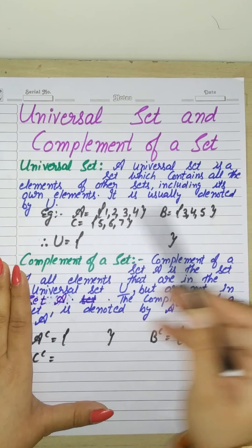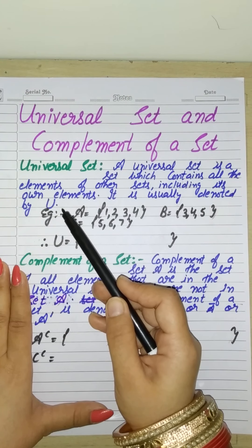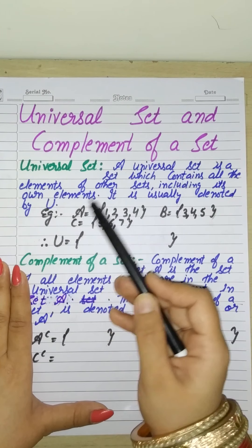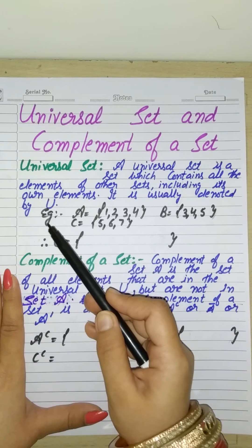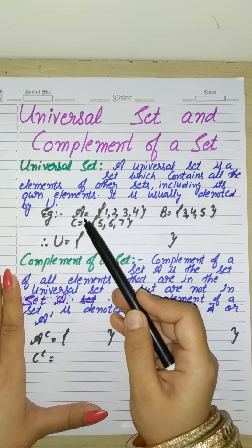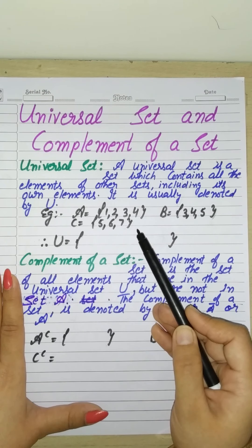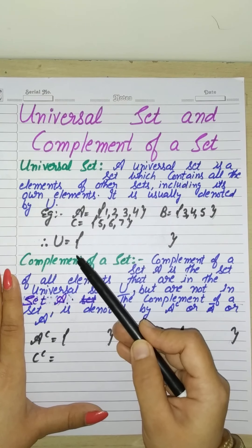It is usually denoted by U. Let's see an example to understand it. Say you have a set A which contains elements, and sets B and C. Now we will make this universal set.